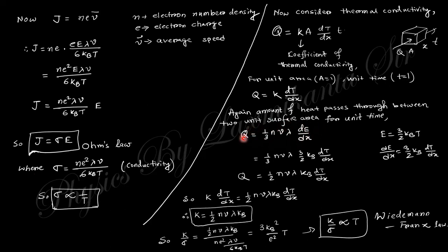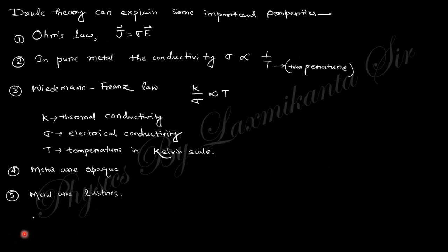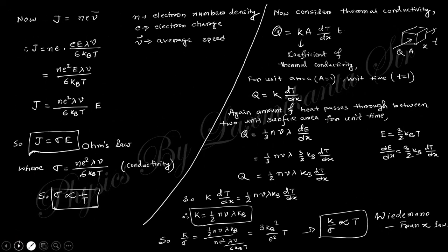From the kinetic theory of gas, we obtain the heat flux relation, and since E equals 3/2 k_B T, taking the derivative with respect to x gives the expression for q. Comparing the two expressions for q, we obtain the thermal conductivity K. Taking the ratio of thermal conductivity to electrical conductivity, we finally obtain that K over sigma is proportional to T, which is nothing but the Wiedemann-Franz law — all proved using the classical Drude theory.